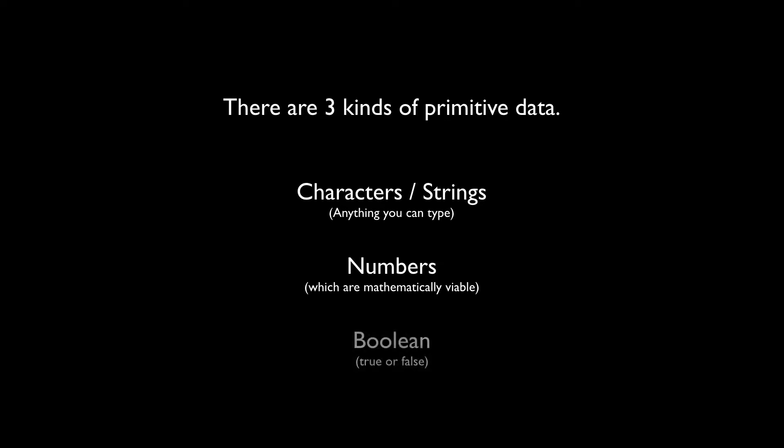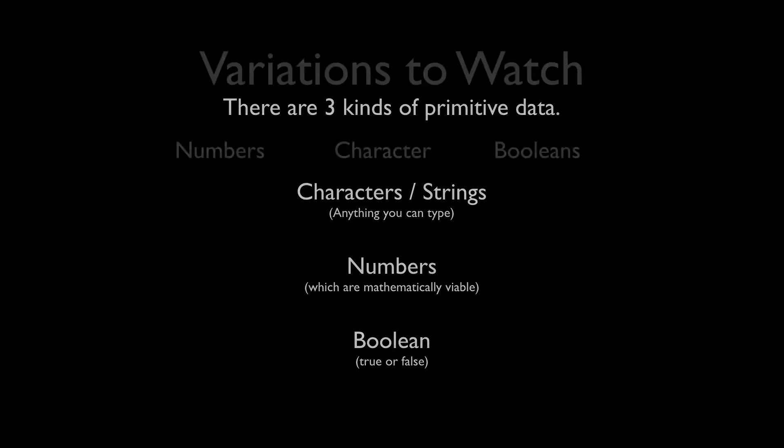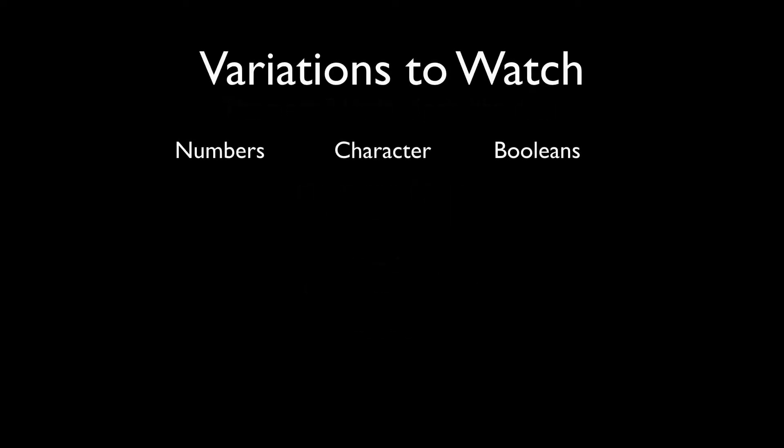The last simple type of data is boolean. A boolean can hold one of two values — either true or false. Those are the only two options, making it the simplest and smallest kind of variable you can have.